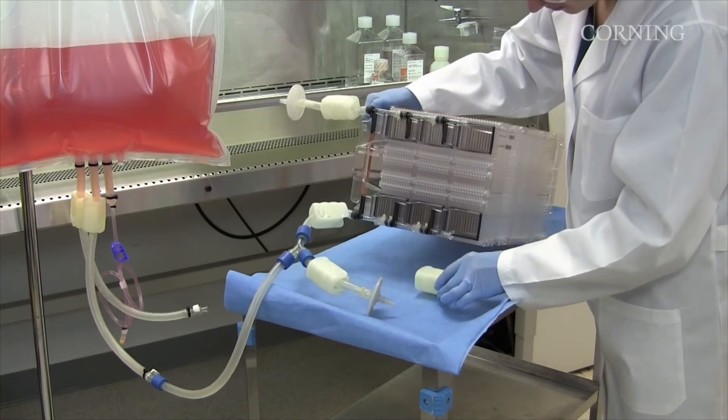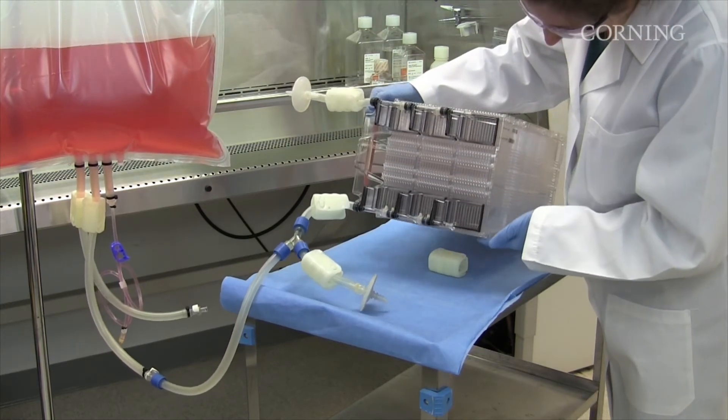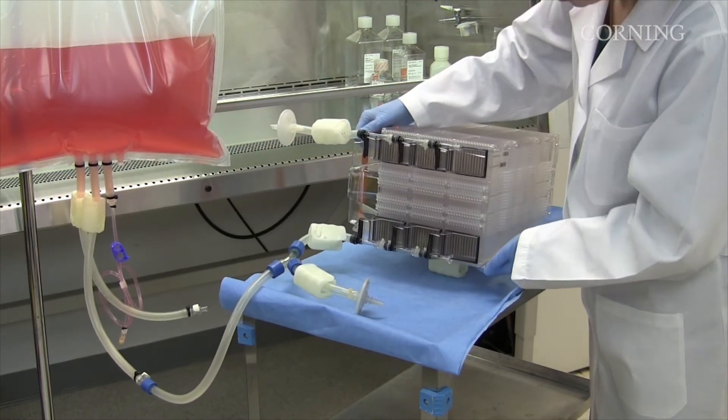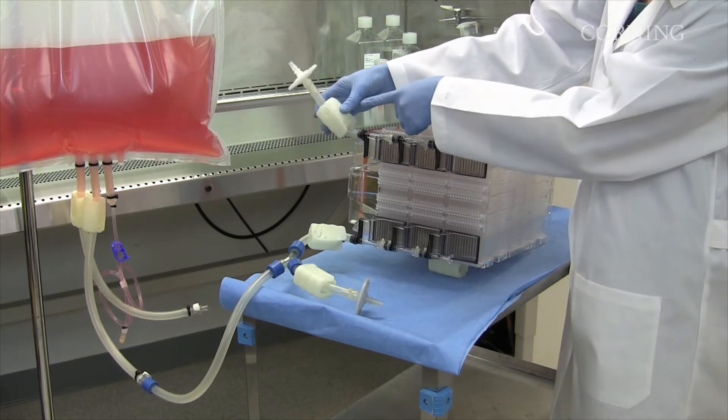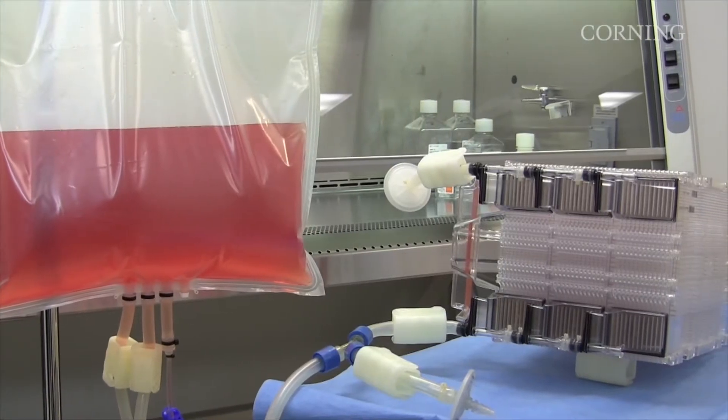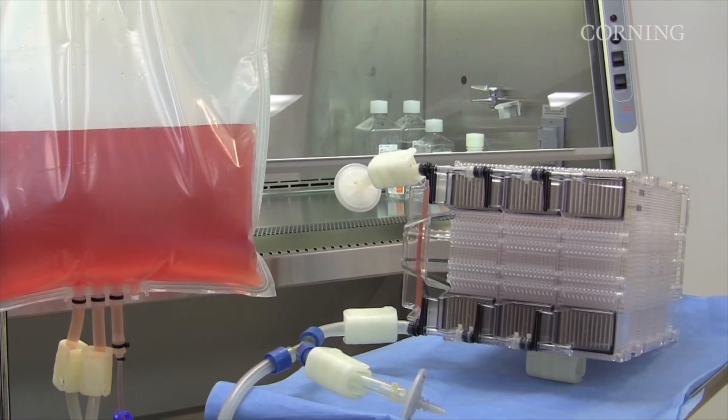Place a clamp or other small object beneath the vessel to raise the front end about 10 degrees. The air manifold should be at the highest point of the vessel. Position the source vessel at the same level as the HyperStack vessel.